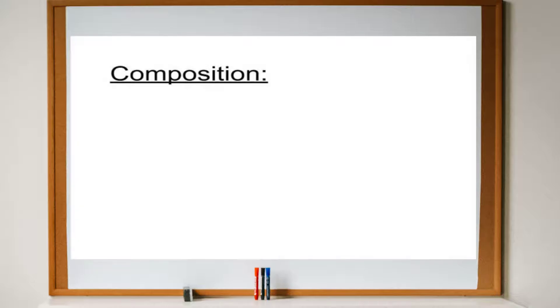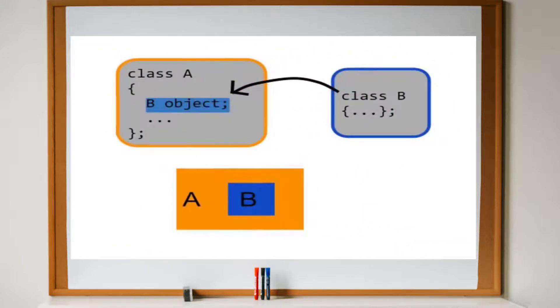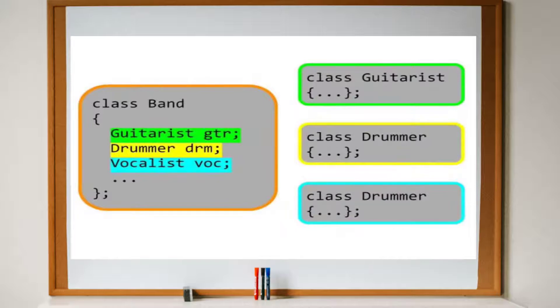Composition is the process of making one class a data member of another class. In a way, one class is embedded in the functionality of another. For example, you could have a class called Band. The data members of Band could consist of objects from the Guitarist class, Drummer class, and Vocalist class. None of these classes are derived from each other. Instead, one class is using the objects of external class.